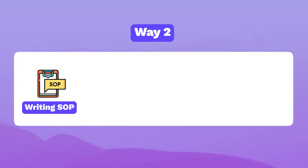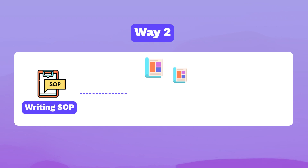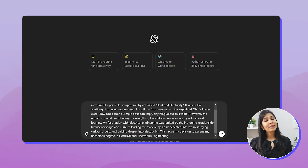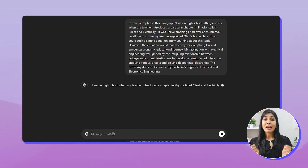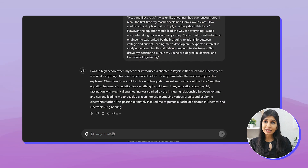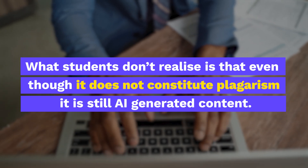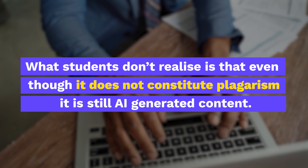The second, more common way is where students write the SOP themselves, but then take it paragraph by paragraph, feed it to the AI tool, and ask it to reword or rephrase it so that it becomes more professional. Most students think this second way should be absolutely fine since the entire writing was done by them, and so there is very little chance it would be flagged as plagiarized content. But what they don't realize is that even though it does not constitute plagiarism, it is still AI generated content.